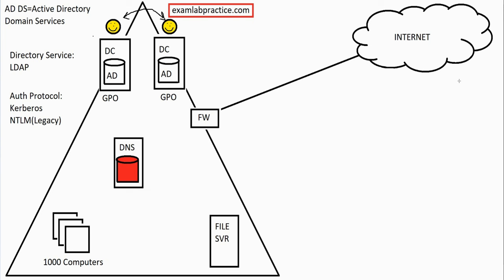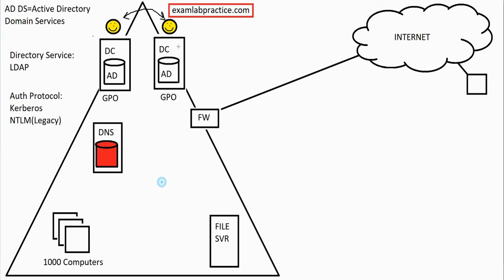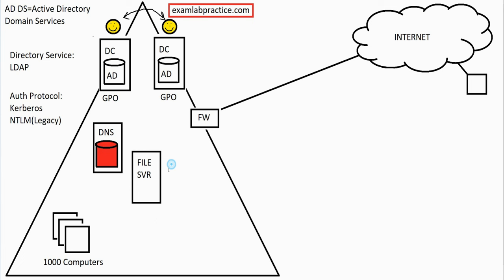The first scenario I want to look at is what happens when a user is not at the office — working from home, which is a lot more popular nowadays. This person needs to be able to connect in and access services inside the network. Companies might have a file server, a SQL database server, Microsoft Exchange for email, and SharePoint — all on-premise servers providing services to devices, with users working from home needing access to those resources.